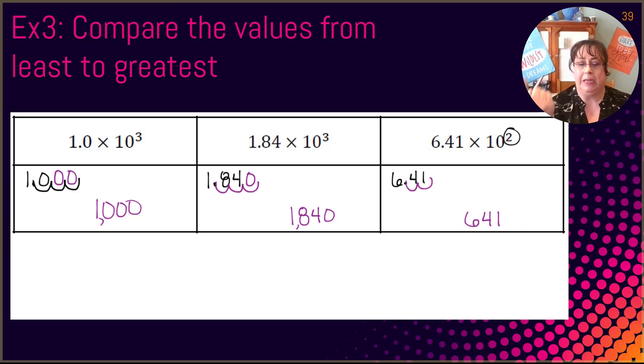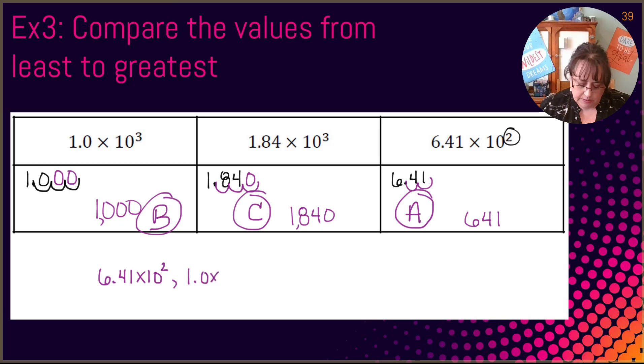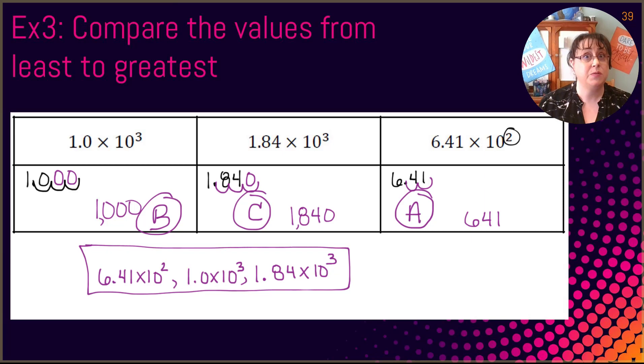But when I write it, I have to go back to my original numbers. So remember when you're doing this, you always go back to the original numbers. So I'm going to put letters next to it. So I'm going to go A, that's my smallest, B, and C. So that I put them in the right order. So my smallest is 6.41 times 10 to the second. That was my smallest. 1.0 times 10 to the third. And then 1.84 times 10 to the third. So this one was a little bit misleading. Some of you might have thought that that 6.41 was going to be the largest because you saw the 6. But it was only times 10 to the second power. So my decimal didn't go over as far. So you are going to have to pay really close attention to what's happening with those numbers.